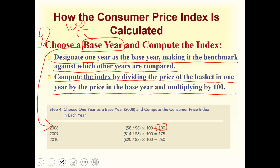We select a base year because we need a benchmark against which the price level of following years will be compared. The formula to compute the Consumer Price Index is: price of the basket in the current year divided by the price of the basket in the base year, multiplied by 100. For 2009: $14 divided by $8 times 100 equals 175. For 2010, the CPI is 250.